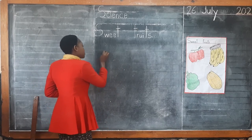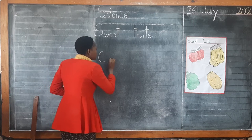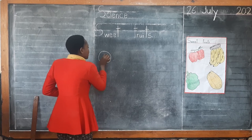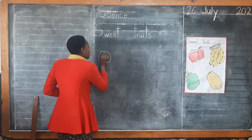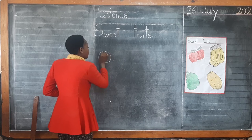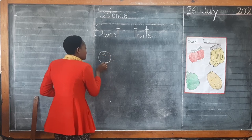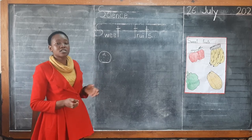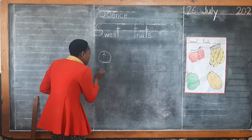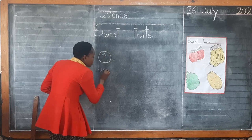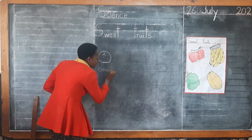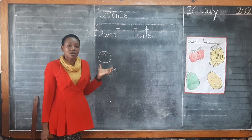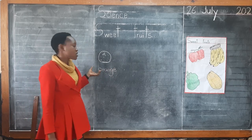Here I am going to draw the first sweet fruit we saw when we went outside. This one here is a sweet fruit — we saw it outside. This one here is an orange. We did see an orange and we say an orange is a sweet fruit. So we are going to write 'orange' here, and make sure the word sits on the line when you are writing it.